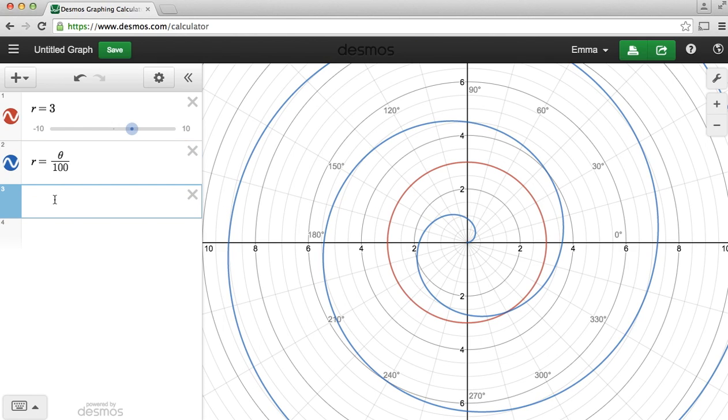Now I'm on a computer, so in order to get the theta symbol, I simply typed out theta, T-H-E-T-A, and got theta.